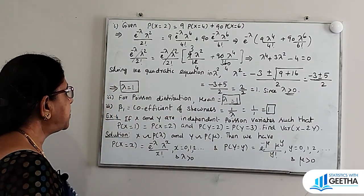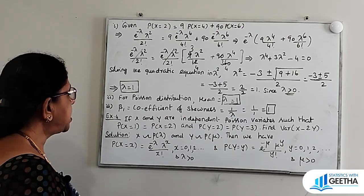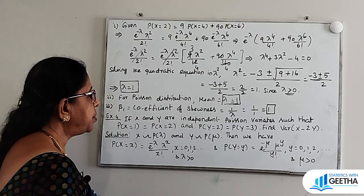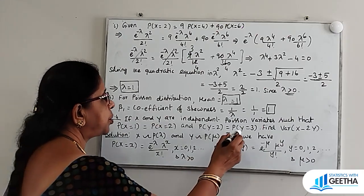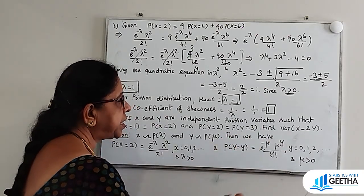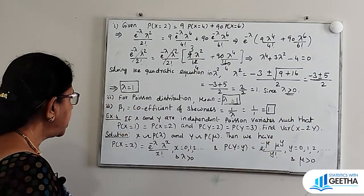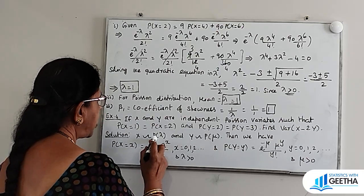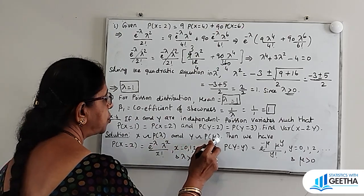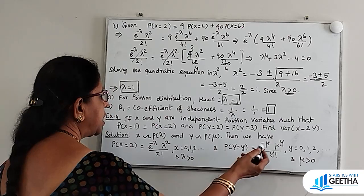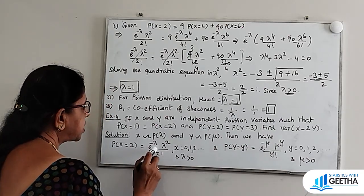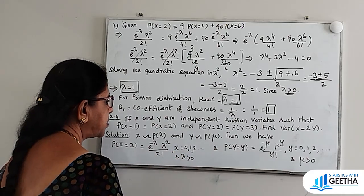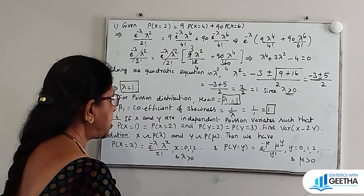Exercise number 4. If x and y are independent Poisson variates such that P(X=1) = P(X=2) and P(Y=2) = P(Y=3), find variance of x − 2y. x follows Poisson with parameter lambda and y follows Poisson with parameter mu, where lambda and mu are positive.